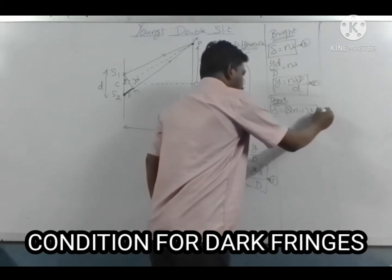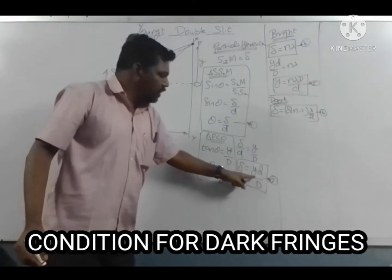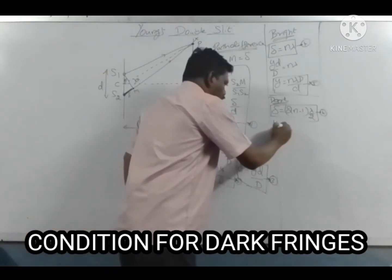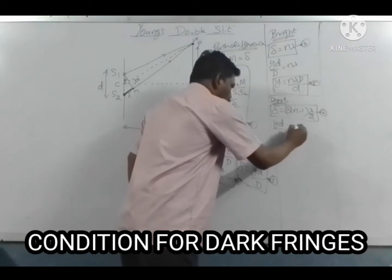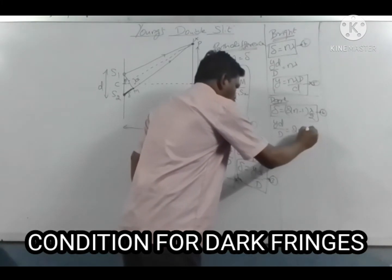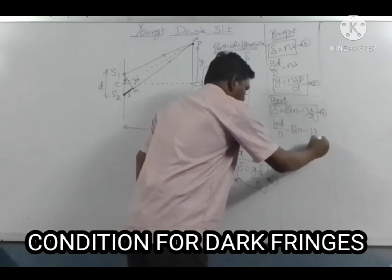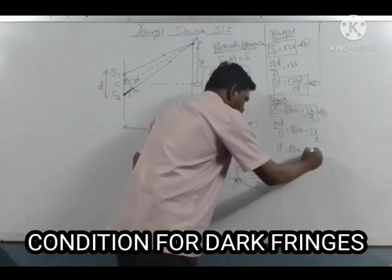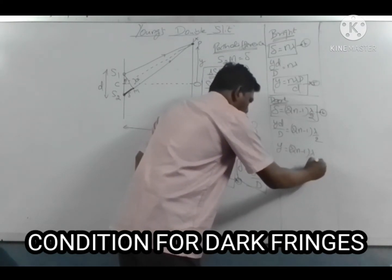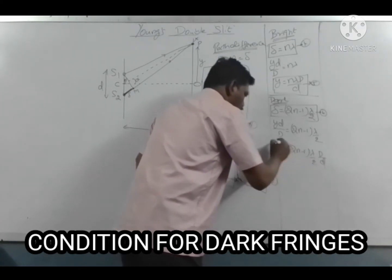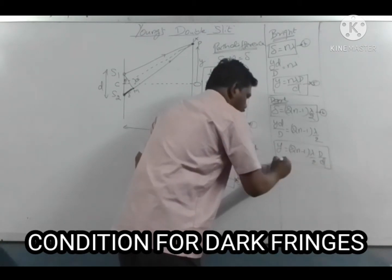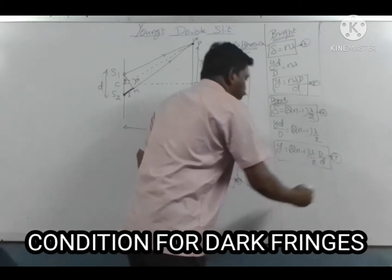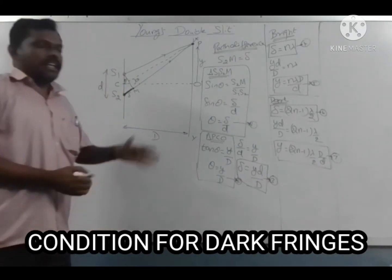Condition for dark: the path difference delta equals (2n minus 1) lambda over 2. Substituting into the path difference equation gives y equals (2n minus 1) times lambda over 2 times capital D over small d. This is the condition for point P to appear dark.